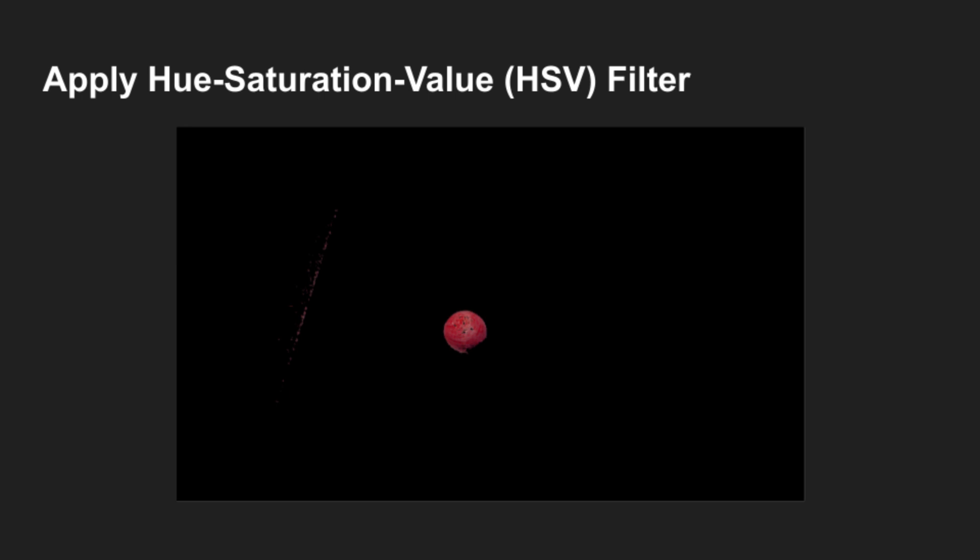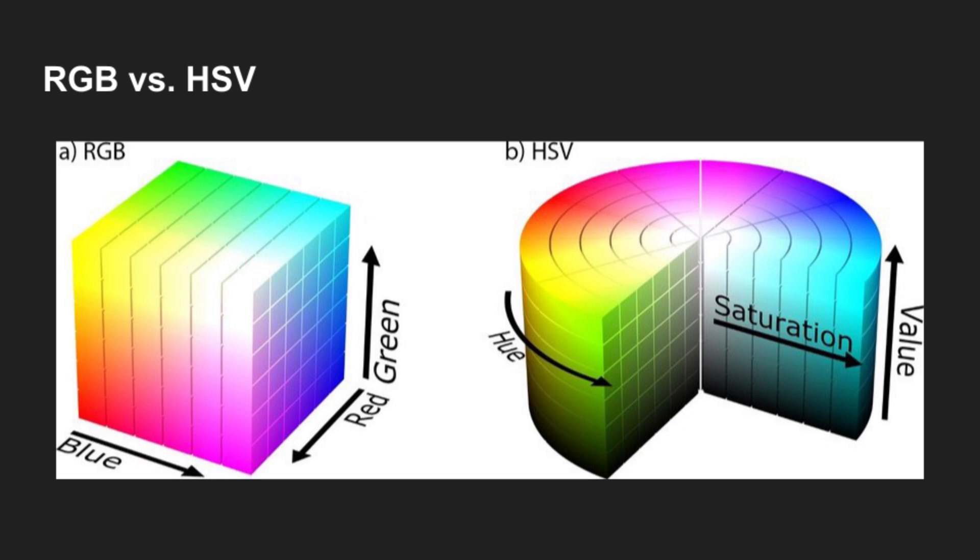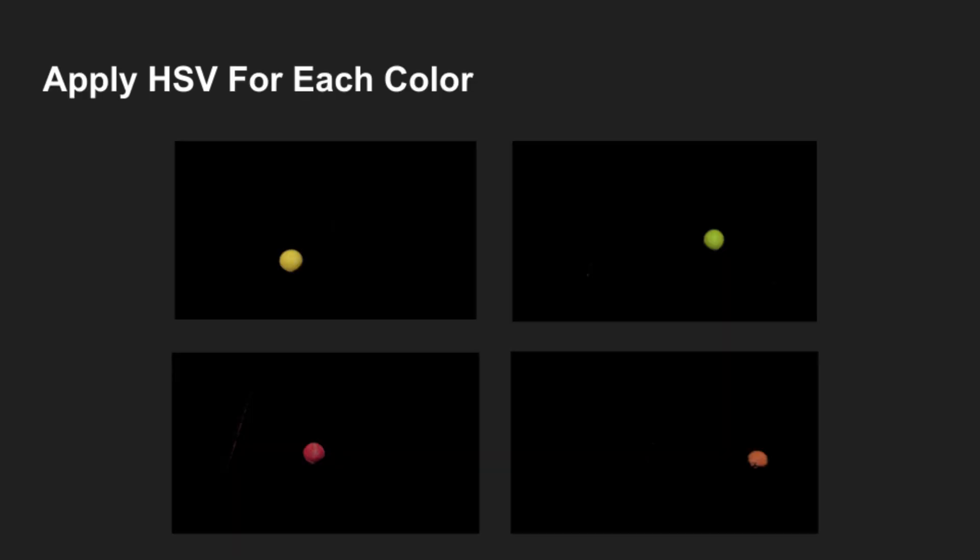Next, an HSV filter will be applied to identify the balls. The HSV color space was chosen instead of RGB due to a greater resilience to changing lighting conditions. This filtering technique is applied to each color. Next, a Gaussian blur is applied to remove noise from the HSV filter and average out the pixels where the balls are located.